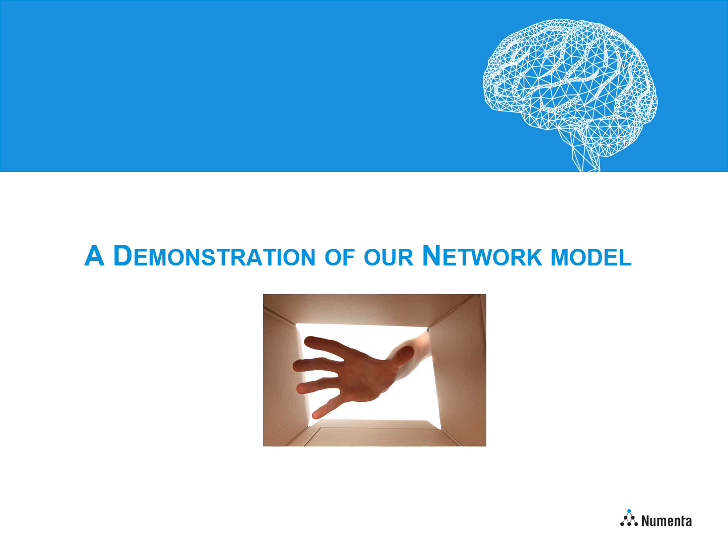To do this, we will look at the question of how a human recognizes objects just through touch, such as reaching into a box with an object and identifying it. We will simulate a hand, and we will assume that information from each finger goes into distinct cortical columns.